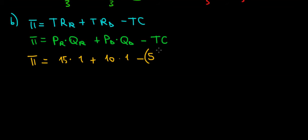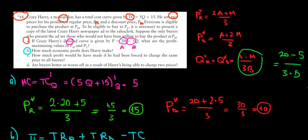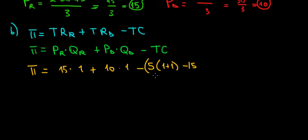So that's going to be 5Q plus 15. But then the quantity is the total quantity, and we sell one unit to the discount, one unit to the regular customers. That's one plus one minus 15. So let me just check if that's actually correct: 5Q plus 15. Yes, that's correct, plus 15. Close brackets.